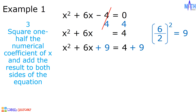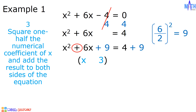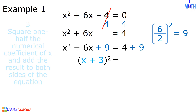On the left side, x squared plus 6x plus 9 is a perfect square trinomial. Let us factor this. To factor a perfect square trinomial, we need to extract the root of the first term and the third term. The square root of x squared is equal to x, and the square root of 9 is equal to 3. Since the sign of the middle term is positive, x squared plus 6x plus 9 is equal to the square of x plus 3. On the right side, 4 plus 9 is equal to 13.